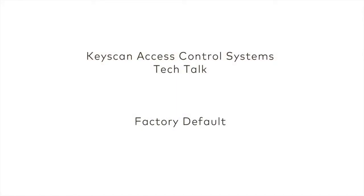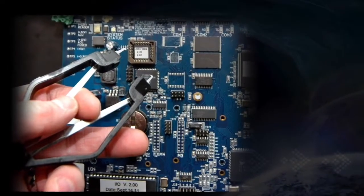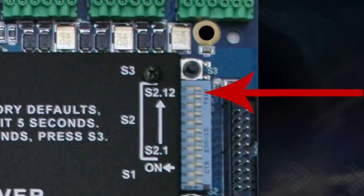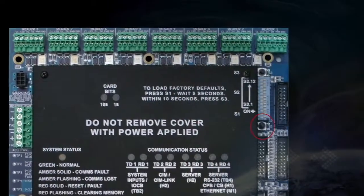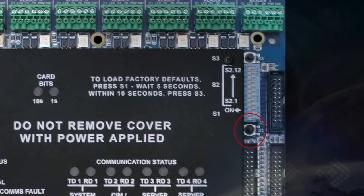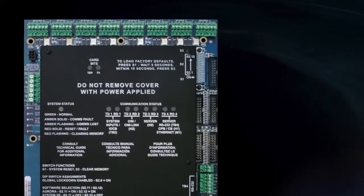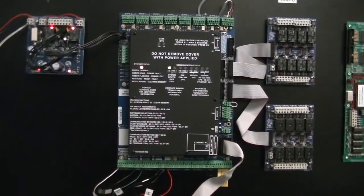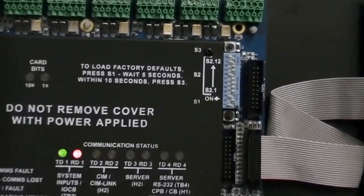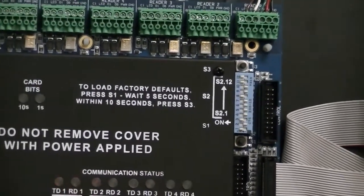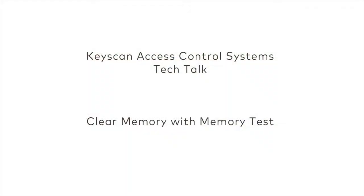In some cases, loading factory default settings may be required — any time an access control unit has been newly installed, a firmware chip has been changed, software selection switches have been changed, or if the protective cover has been removed to mount a NETCOM 2P directly on the unit. To do a factory default, press the S1 reset button momentarily, wait approximately 5 seconds, then press your S3 clear memory button. Once initiated, you'll hear an intermittent tone and the status LED will flash red. Once complete, the status LED will turn amber and the tone will stop. This process can take up to 2.5 minutes and is known as a clear memory with full memory test procedure.